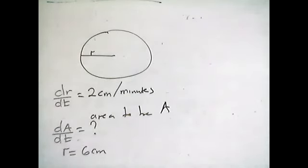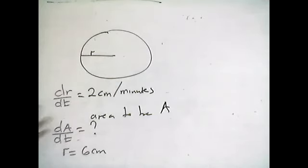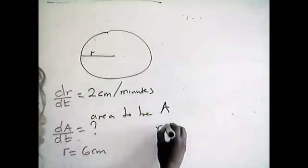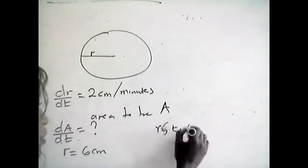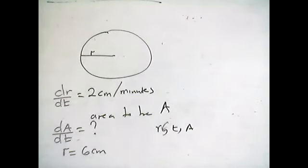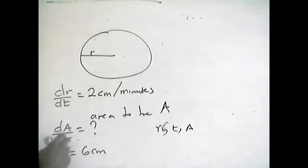Here we have to identify the functions involved. We have the function of the radius, the function of area, and time as a function on its own. So in this question, we have about three variables: R, T, and A — radius, time, and area. We can use the chain rule to find the value of dA over dT.